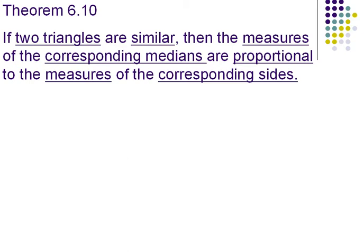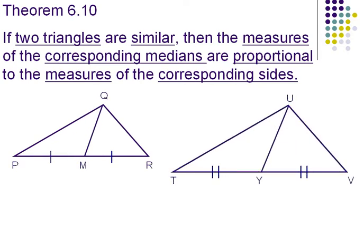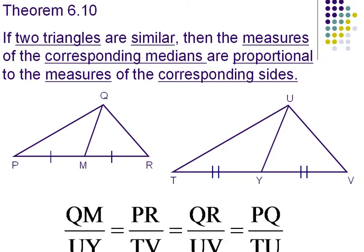Another theorem. If two triangles are similar, then the measures of the corresponding medians are proportional to the measures of the corresponding sides. Here we have two medians drawn in these two triangles, median QM and UY. And the ratio of QM to UY is the same as the ratio as the other parts of the triangle.